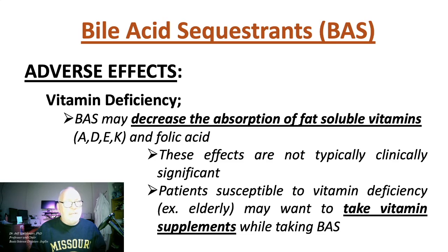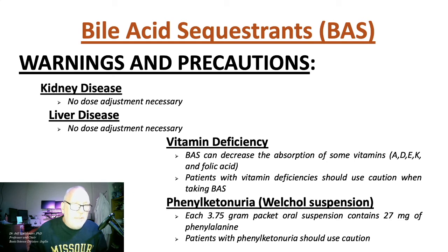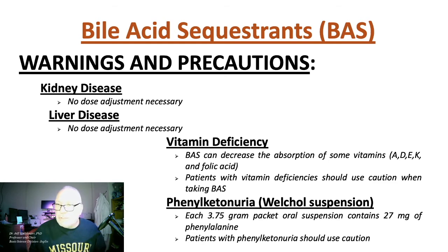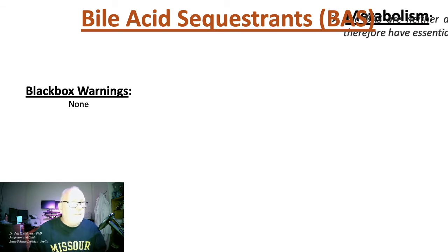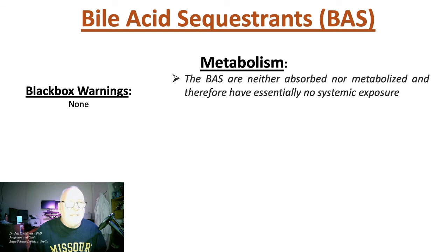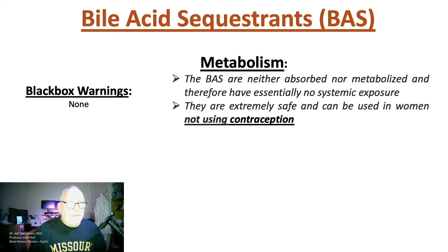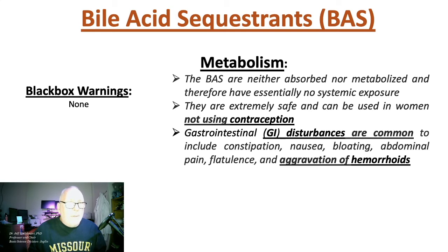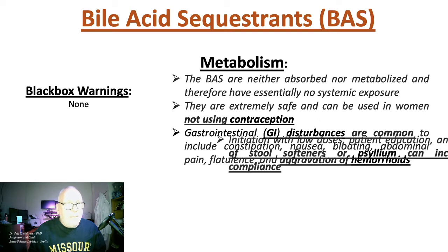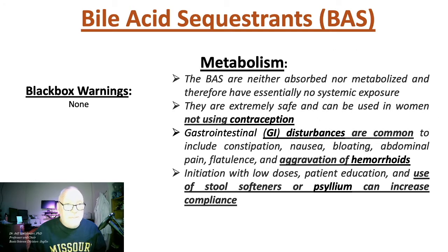This is typically not clinically significant, and patients can take vitamin supplements while on bile acid sequestrants. In patients with phenylketonuria taking the powder suspension, each 3.75 gram packet contains 27 mg of phenylalanine, so patients with PKU should use caution. There are no black box warnings. These compounds are not metabolized because they're not absorbed and have no systemic exposure — extremely safe and can be used in women not using contraception, though bile acid sequestrants would bind to oral contraceptives. GI disturbances are common and can aggravate hemorrhoids; use of stool softeners or psyllium soluble fiber can increase patient compliance.